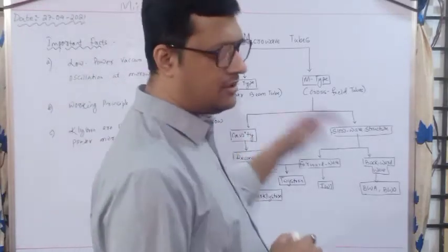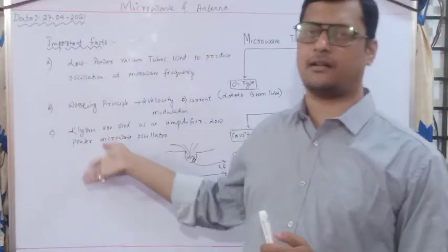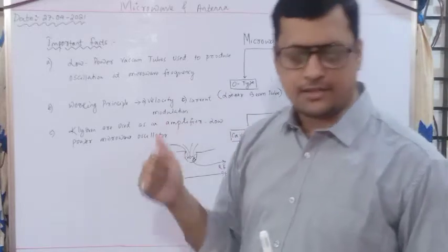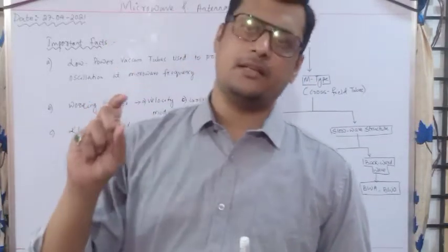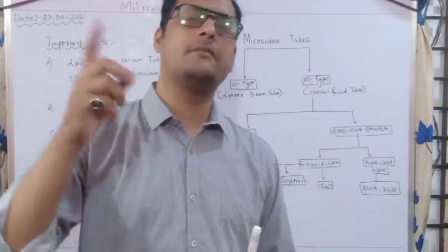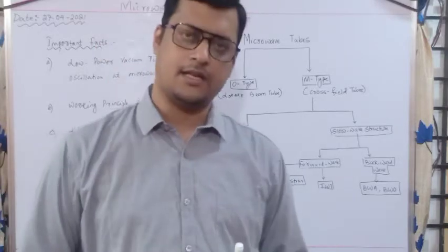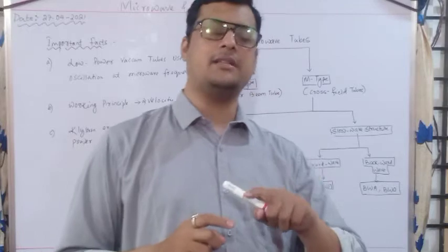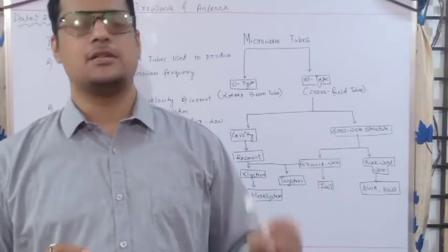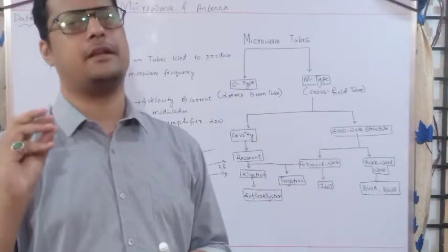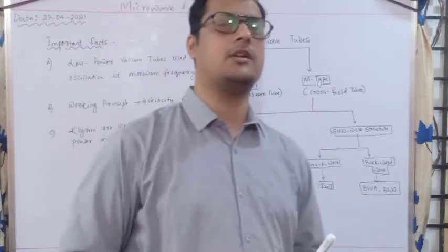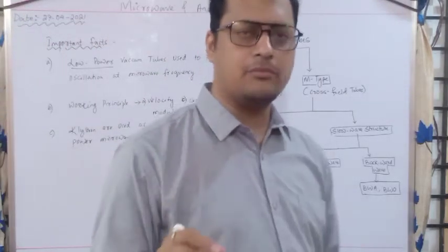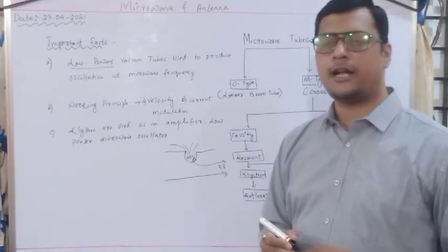Before entering into the reflex klystron, here are some important facts. One: low power vacuum tubes are used to produce oscillations at microwave frequency. Whenever the potential is very very less, the frequency is very very high, because potential is related to wavelength, and wavelength is inversely proportional to frequency. So once the frequency is high, the wavelength is very less, the potential is very less, and the power is also very very less. That is why it is called low power.